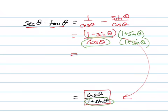This is a difference of perfect squares, so that's going to be (1 - sin²θ)/(cos θ × (1 + sin θ)).